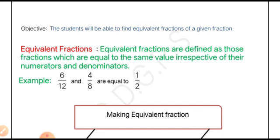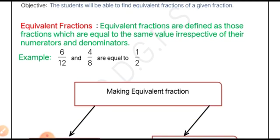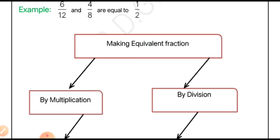Equivalent fractions have the same value irrespective of their numerators and denominators. Here you can observe 6/12 and 4/8 are equal to 1/2. Although their numerators and denominators are different, their overall values are equal, so they are said to be equivalent fractions. We have two different methods of finding them.